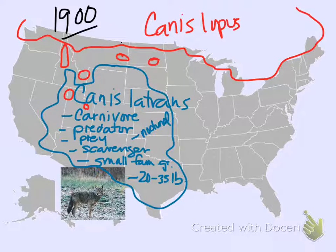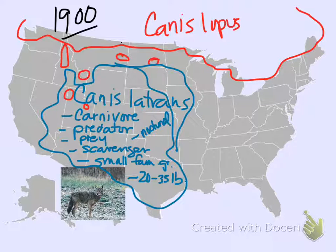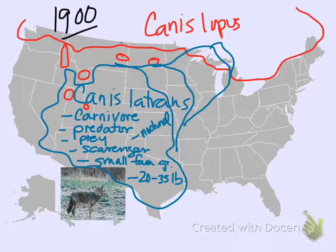Nature hates a vacuum. If there's something sitting there and nobody else is using it, something will use it. All that territory — coyotes are great opportunists, and slowly but surely they start to spread their range, because there's nobody to compete with. It's like realizing the bully who's picked on you all year has changed schools — you're free to come out of your shell a little bit. And then something really weird happens up in Canada, in Algonquin National Park.